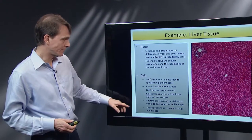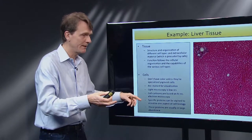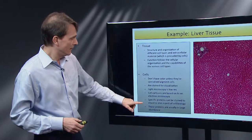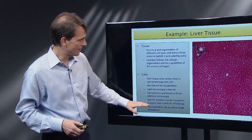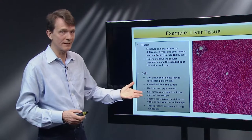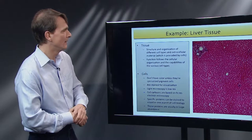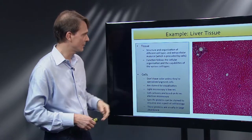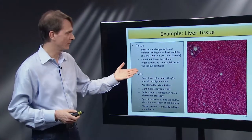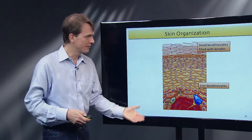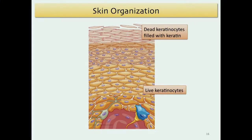The light microscopy here is low resolution and the cell cartoons shown later are based on the artist's rendering of electron microscopic images. There are lots of different types of proteins in the cell, and scientists use specific stains for specific proteins — typically those present in large abundance. Structure and organization of different cell types and extracellular material is what we refer to as tissue. The function of tissue basically follows the cellular organization and the capabilities of the various cell types.